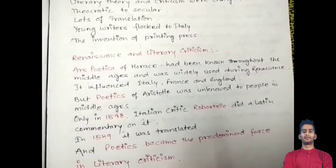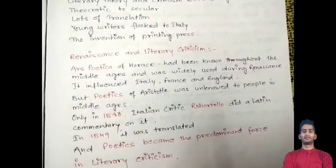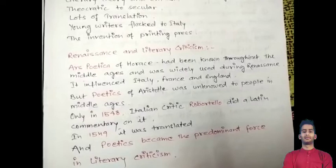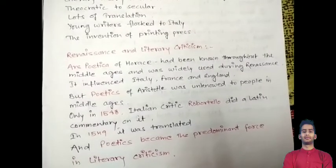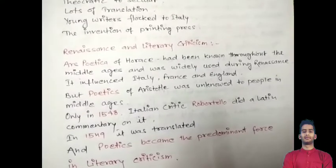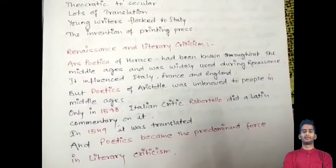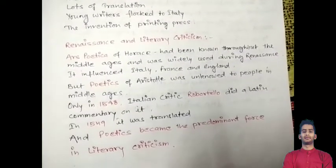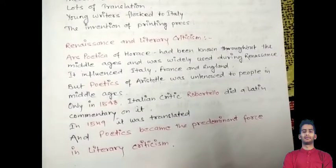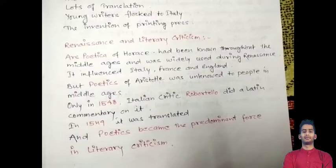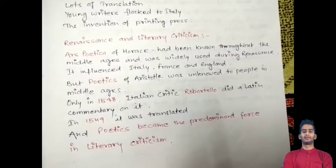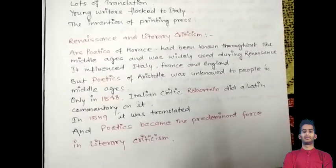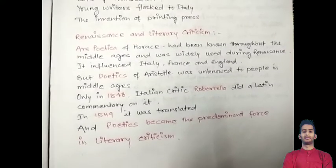Ars Poetica influenced Italy, France and England. However, Aristotle's Poetics was not known to people in the Middle Ages. Only in 1548, Italian critic Robortello did a Latin commentary on it, and in 1549 it was translated. After that, the Poetics became the predominant force in literary criticism.